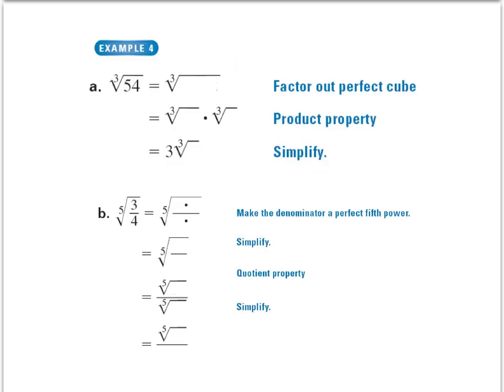Let's do one more example of writing radicals in the simplest form. We'll work on A for now. What we want to do is we want to factor out a perfect cube. 54 divided by 2 allows us to get 27 times 2. We know 27 is a perfect cube.